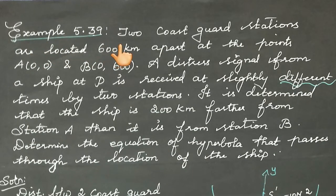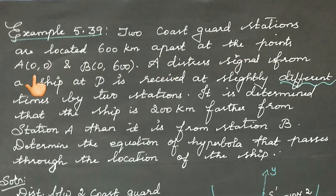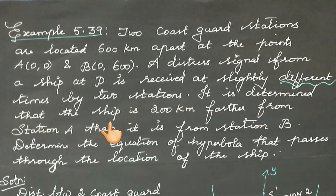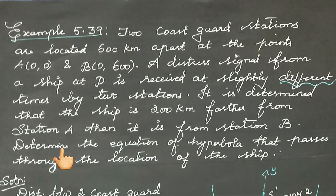Example 5.39. Two Coast Guard stations are located 600 km apart at the points A(0,0) and B(0,600). A distress signal from a ship at P is received at slightly different times by two stations. It is determined that the ship is 200 km farther from station A than it is from station B. Determine the equation of the hyperbola that passes through the location of the ship.